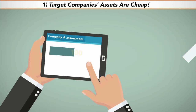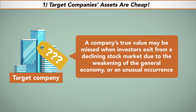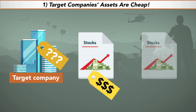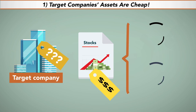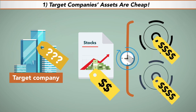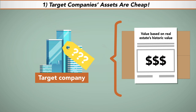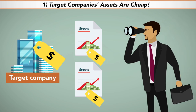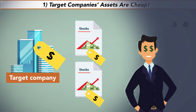The cheap asset scenario develops when stock market investors undervalue a company. Often, a company's true value may be missed when investors exit from a declining stock market due to the weakening of the general economy or an unusual occurrence like a geopolitical event. In such a market situation, even an efficient U.S. stock market may produce mispricing of certain stocks. Another type of stock market mispricing may occur when the stock price of a company underestimates the intrinsic value of certain assets or their potential future value. For example, a company with a real estate portfolio that is valued on the balance sheet based on the real estate's historic value, not its current market value, may lead to a mispricing of these assets and is reflected in the lower share price of the company's stock. When assets are undervalued, other investors will look for these buying opportunities, correcting the mispricing of these stock shares.